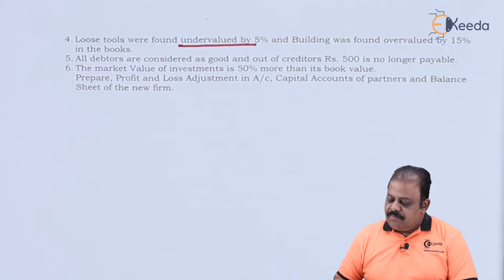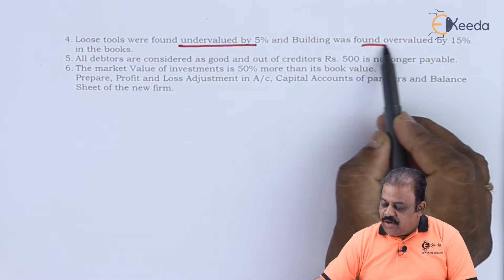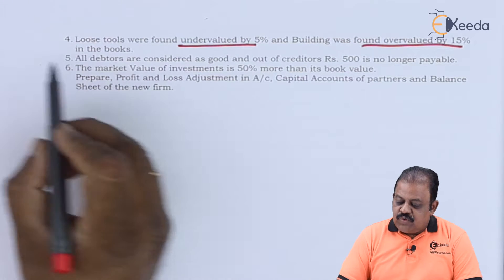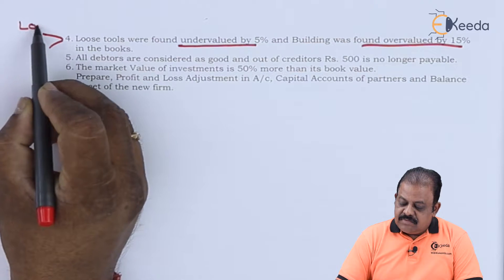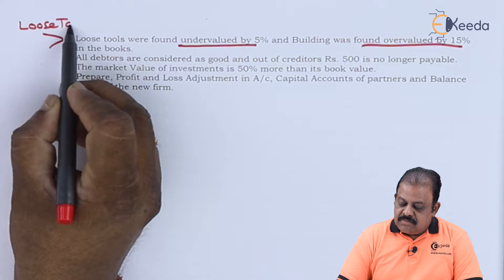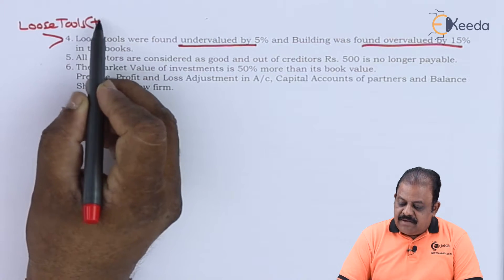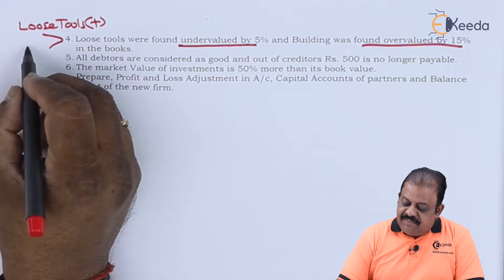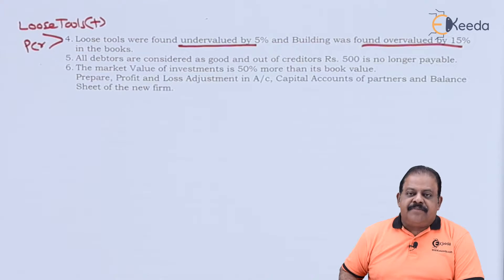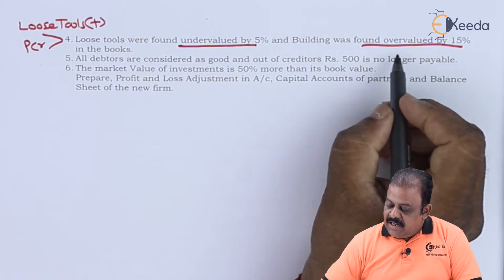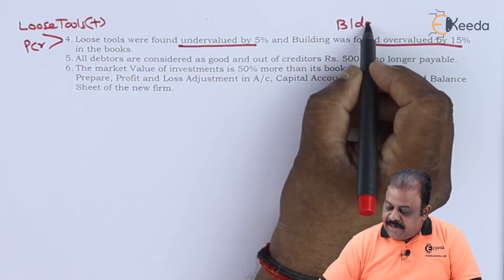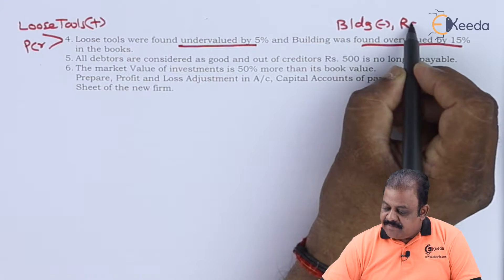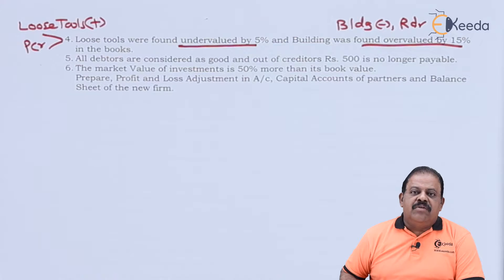Building was found overvalued by 15%, so we are required to adjust the building value downward. The second effect will be a debit to the profit and loss adjustment account.